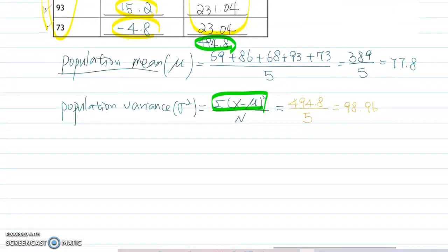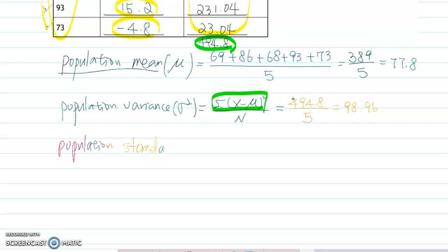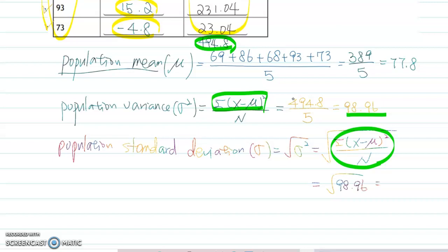The last one, the population standard deviation. The notation is σ (sigma), which is square root of σ². That also represents square root of the sum of (x minus μ)² over n. So we have this amount, which is 98.96. Therefore you can simply rewrite this as square root of 98.96. Then what do you get?